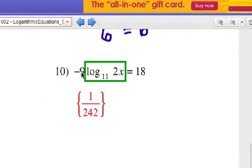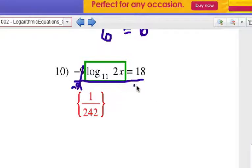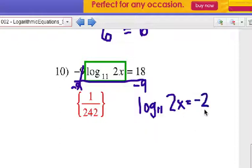Okay, number ten. Negative nine times that log expression equals 18. Well, let's divide both sides by negative nine. So, now we have log base eleven of two x equals negative two.